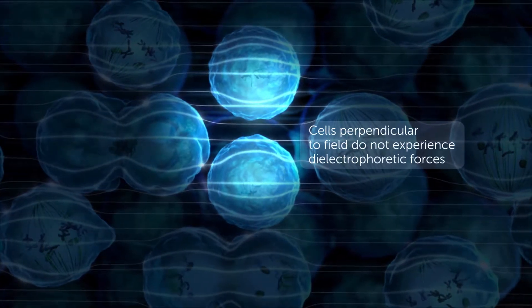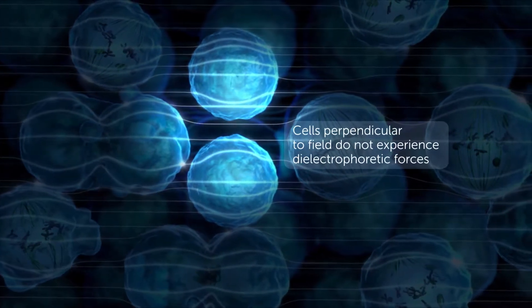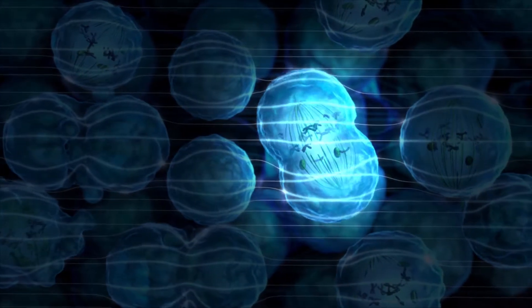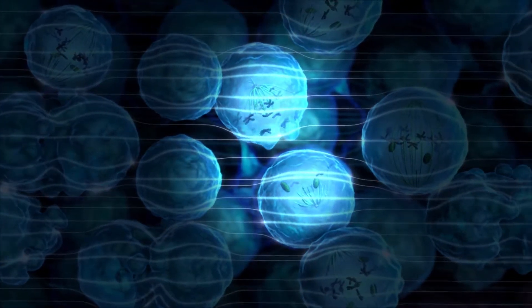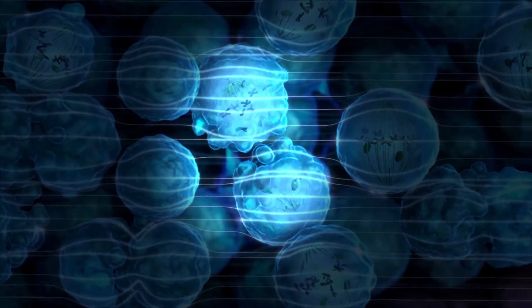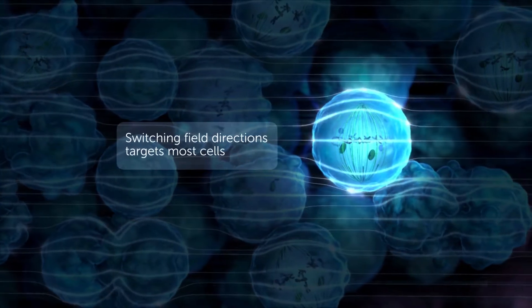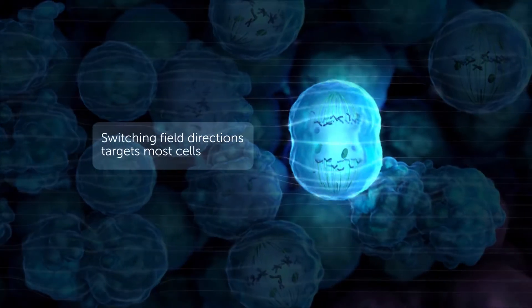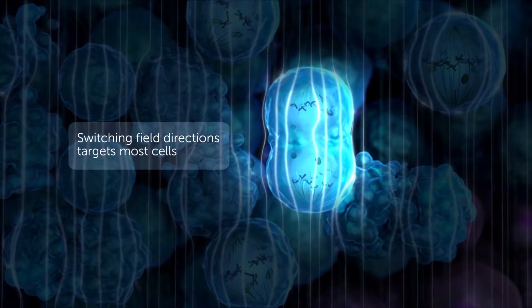Because cells divide in all directions, TT fields are delivered through two pairs of transducer arrays that generate perpendicular fields within the treated tumor. Cycling the field between these two directions ensures that a maximal range of cell orientations is targeted.